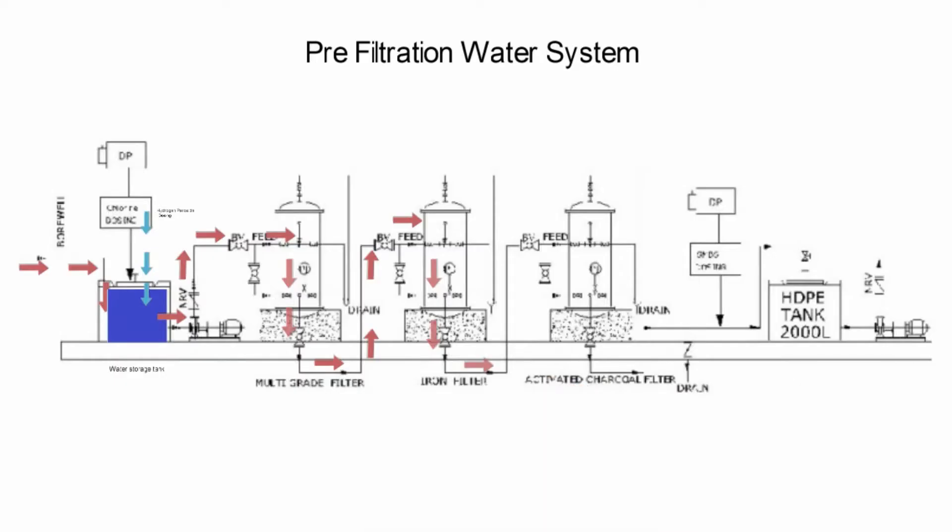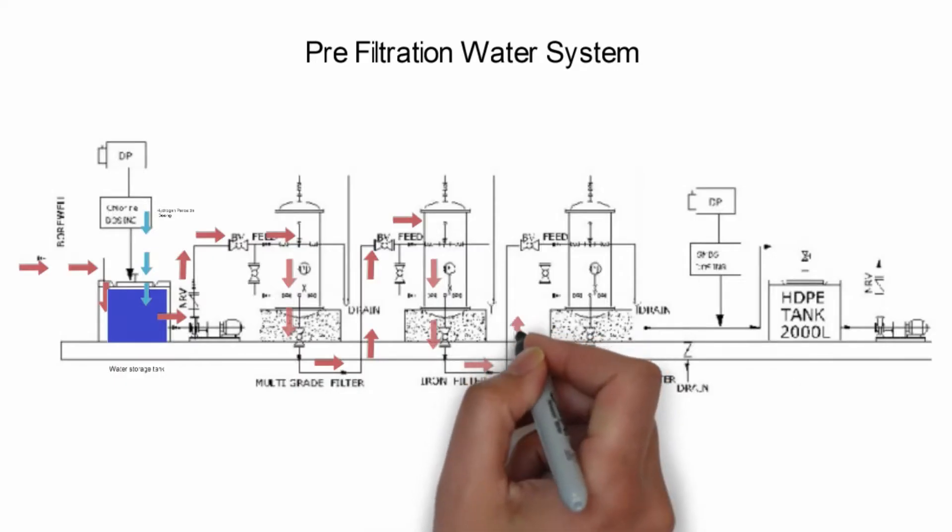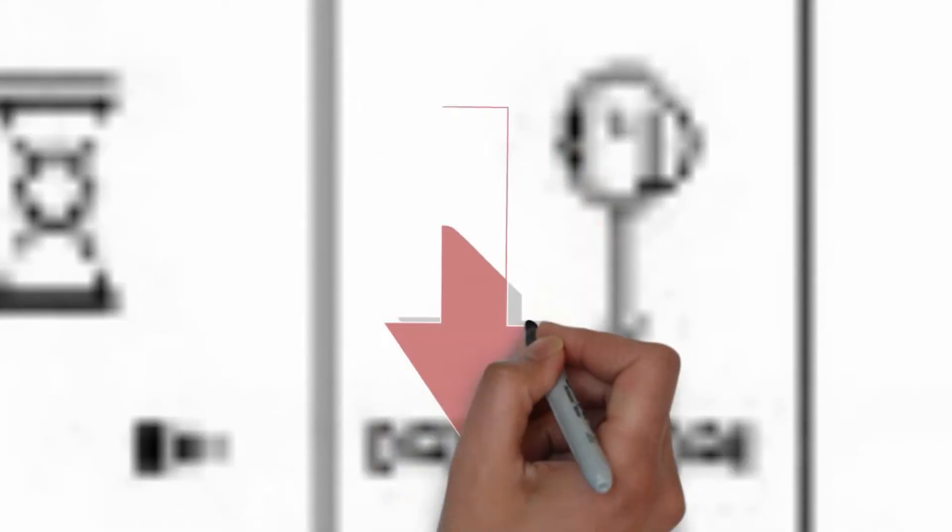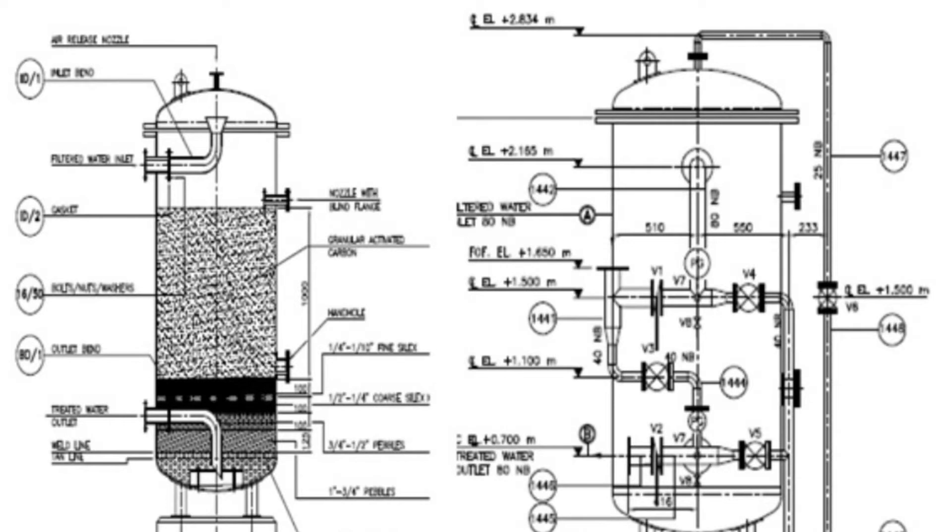Water from the iron removing filter is passed through activated carbon filter, also called ACF. ACF works on the principle of adsorption. The activated carbon filter medium adsorbs the polluted molecules. It is primarily used to remove the color and odor of the water.